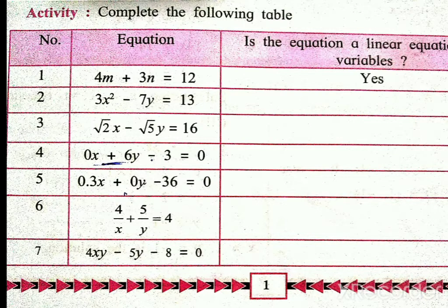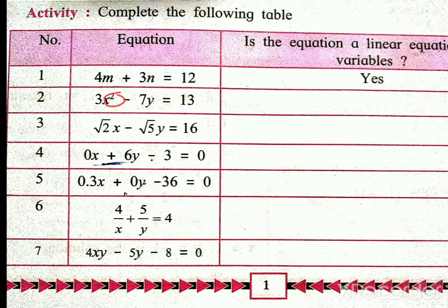Second equation: 3x squared minus 7y is equal to 13. Here the variables are 2, that are x and y, but its degree is not 1 — it is 2. So it is not a linear equation in two variables.